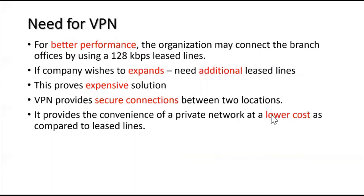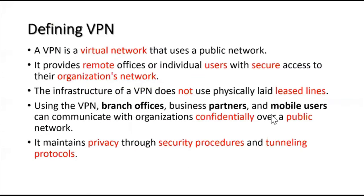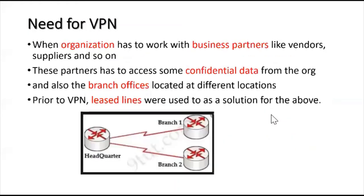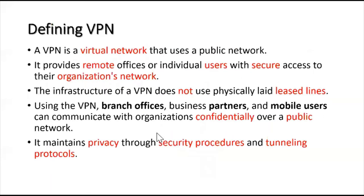VPN can be defined as a virtual network that uses a public network, unlike the lease line which does not use a public network — the lease line uses its own private connection. In the case of VPN, it uses the public network as a connection, which builds a virtual network similar to a private network, but through the public network.